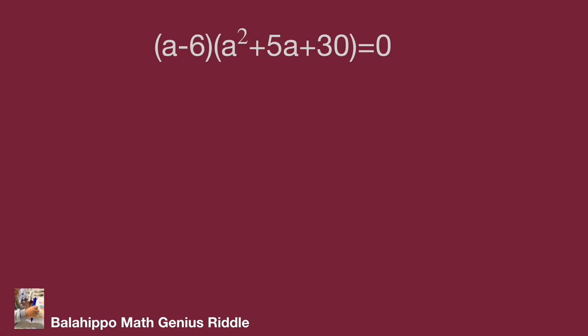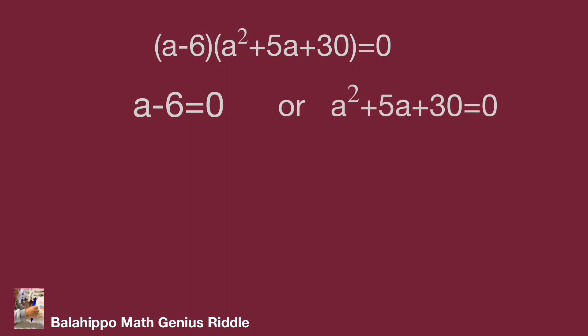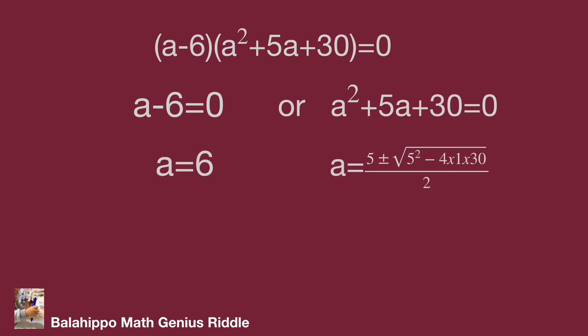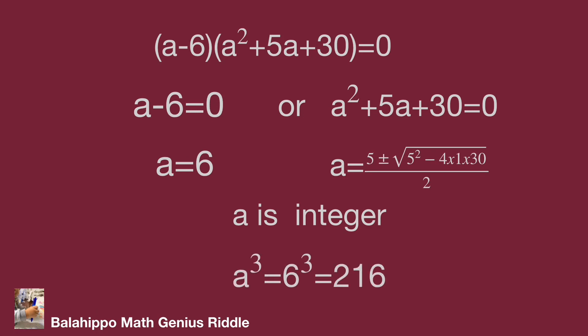Then either a minus 6 equals 0, or a² plus 5a plus 30 equals 0. So a equals 6, or a equals (−5 ± √(5² minus 4 times 1 times 30)) over 2. But since a is an integer, the quadratic a² plus 5a plus 30 yields no integer solution. The only answer is a equals 6.